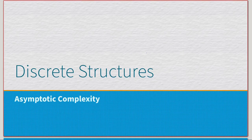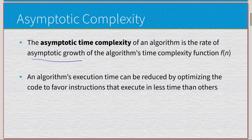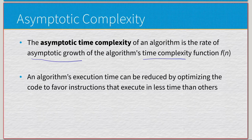We previously discussed particular time complexities, and this time it's going to be asymptotic time complexity — basically the rate of asymptotic growth of the algorithm's time complexity function. The time complexity is analyzing how, as the number of inputs grow for an algorithm, that affects the generated number of computations it has to do. We looked at various rates of growth: logarithmic, linear, linearithmic, quadratic, and others.